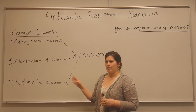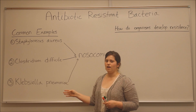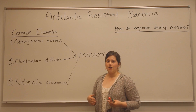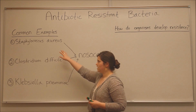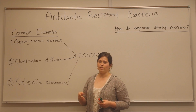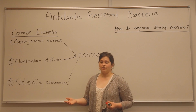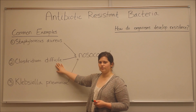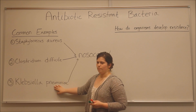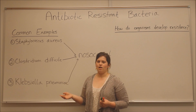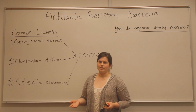Before we start talking about how they cause disease, I want to emphasize that all three of these bacteria are sometimes found as part of the human normal microbial flora. For example, Staphylococcus aureus is commonly found in the nose, throats, and on the skin of many people around the world without causing infection. Clostridium difficile is often found in low numbers in the human colon. And Klebsiella pneumoniae is also found in humans sometimes in the mouth, on the skin, and in the intestines without really causing disease.